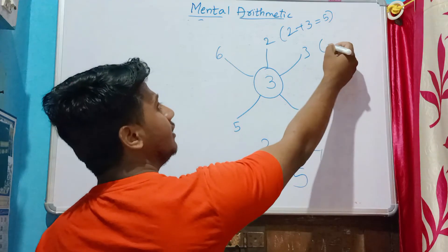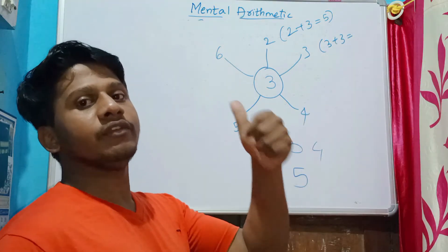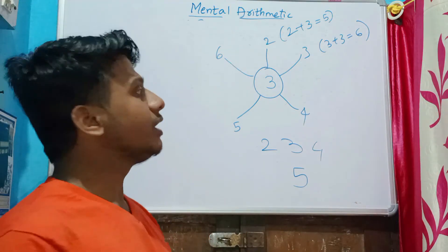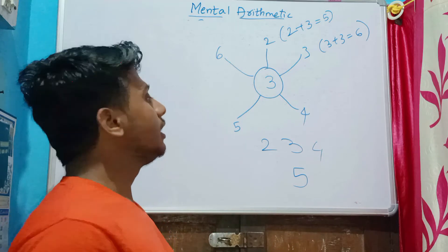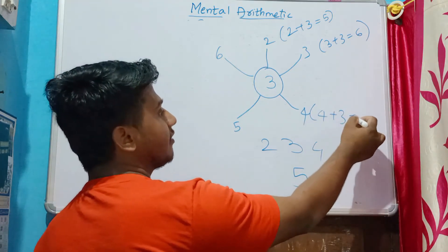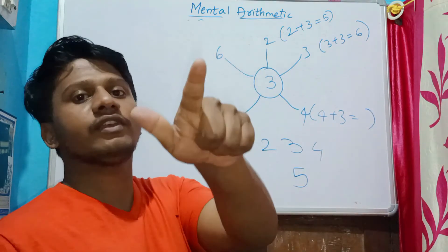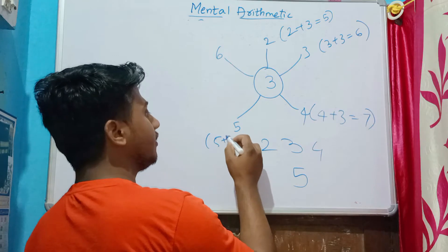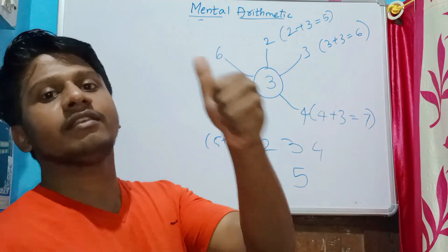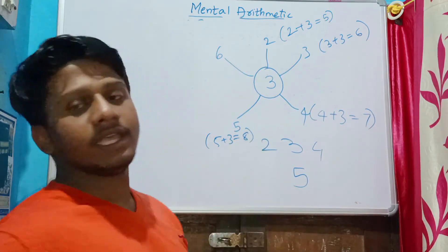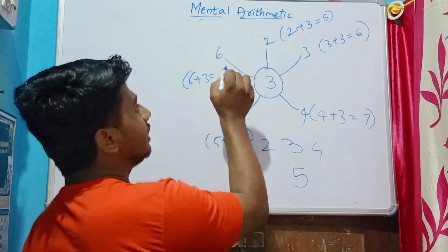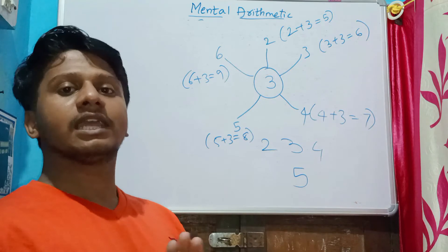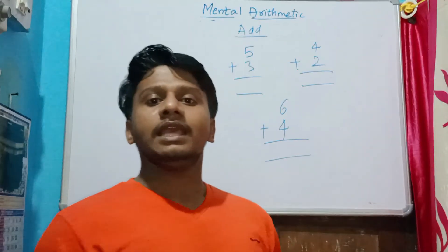The same way: three plus three — after three: four, five, six — equals six. Four plus three — after four: five, six, seven — equals seven. Five plus three — after five: six, seven, eight — equals eight. And lastly, six plus three — after six: seven, eight, nine — equals nine.